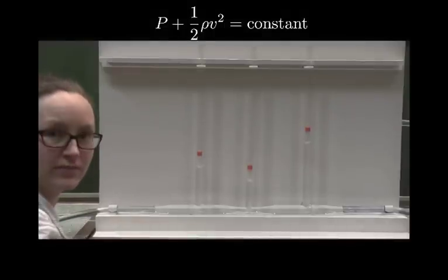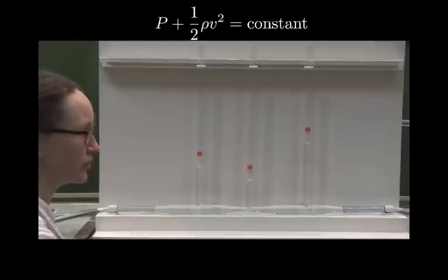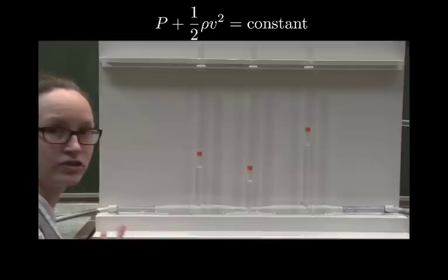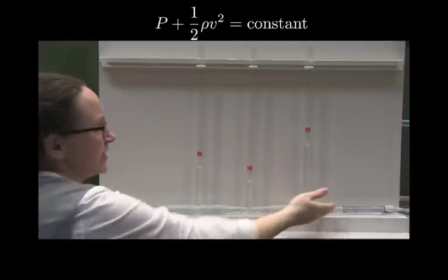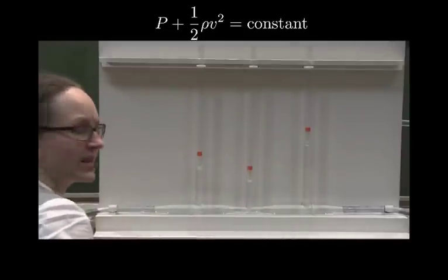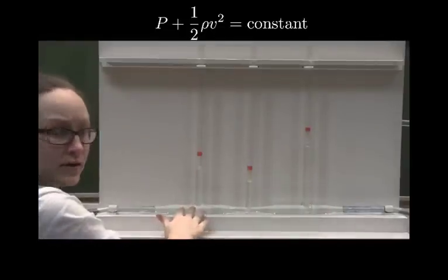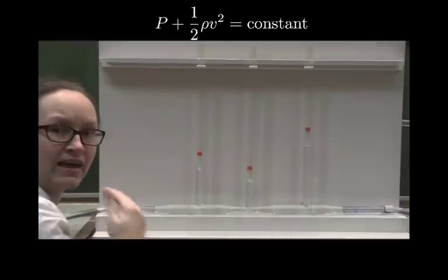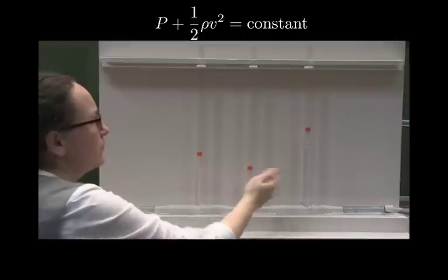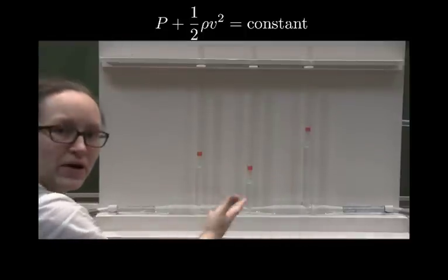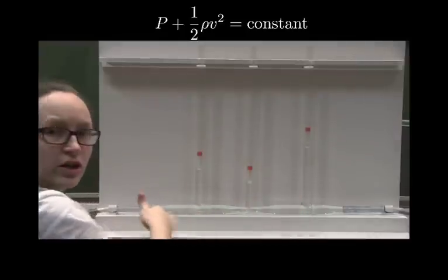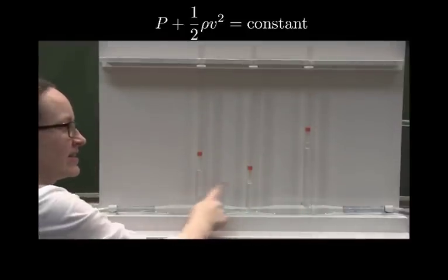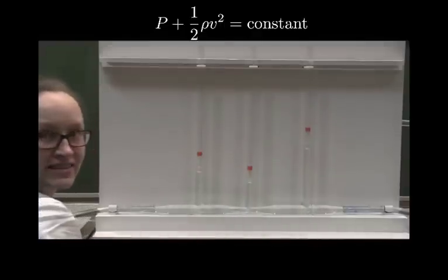The reason actually comes about because, if you watched how we derived Bernoulli's equation, you saw that it came about because of the conservation of energy. Now this fluid flow is actually losing energy as we go from here to here, because there is friction between the walls of the glass and the fluid flowing through them. So Bernoulli's equation isn't quite perfect for this system, and so the pressure at this end is slightly lower than the pressure at this end.